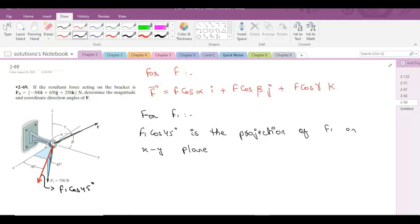Now I can resolve this projection into two components along x and y axis. So one component is along the x-axis and one component is along the y-axis. So let's label them as well.